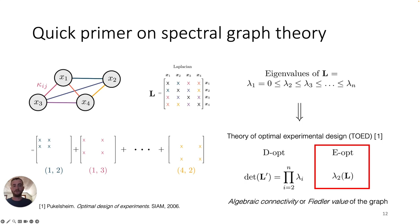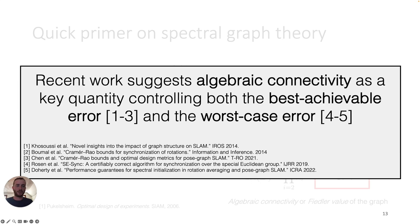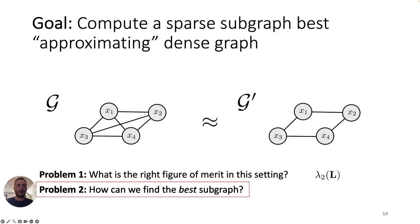Our goal is to optimize specifically the second eigenvalue of the Laplacian matrix — the first non-zero eigenvalue — which is so important it has two names: the algebraic connectivity or Fiedler value of the graph. We're interested in this parameter for two reasons: computing it is relatively efficient since it requires only a single eigenvalue rather than a full matrix decomposition, and in several recent works, the algebraic connectivity has been found to control both the best achievable error for SLAM through Cramér-Rao lower bounds and the worst-case error for a given estimator.